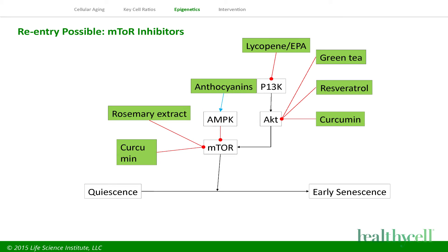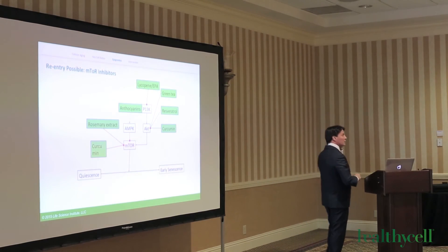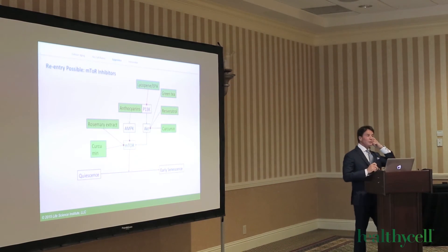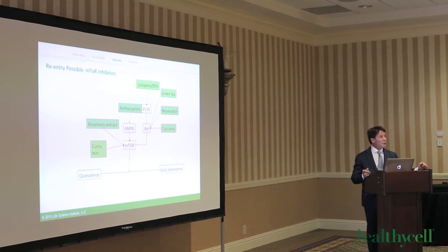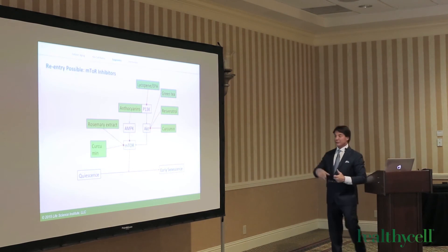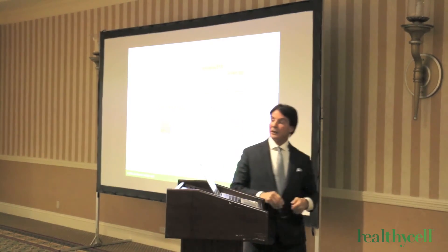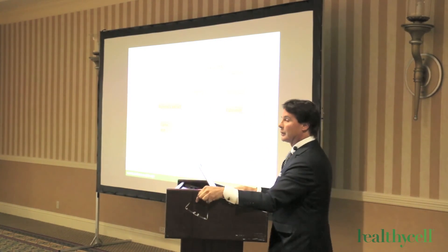mTOR inhibitors are probably going to be the next big frontier in anti-aging. We included a whole bunch of ingredients here, particularly the anthocyanidins. A quick comment on metformin: metformin is one of the most potent AMPK mTOR inhibitors. There's a new study called the TAME study — a multi-center national study looking at thousands of people — because diabetics on metformin for years live longer than people who don't have diabetes. They're inhibiting senescent cells and switching on about 20 different genes that are ideal for cell aging.